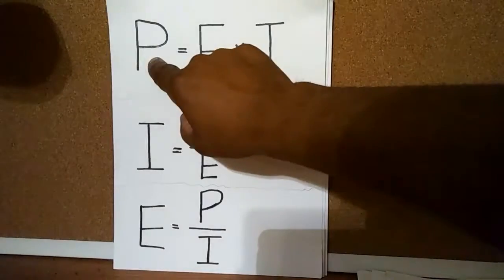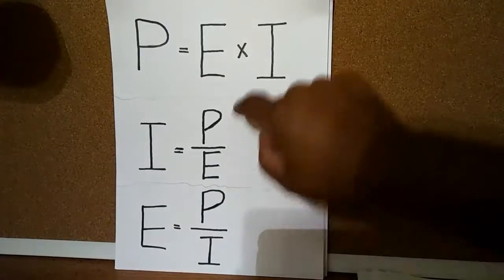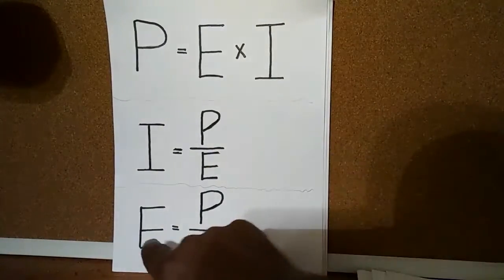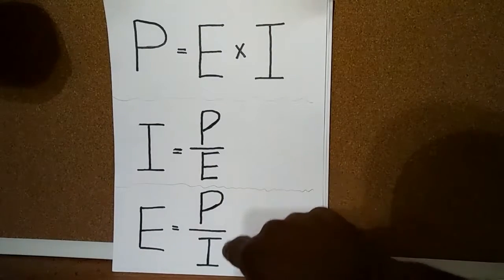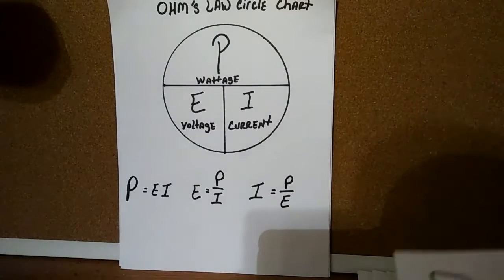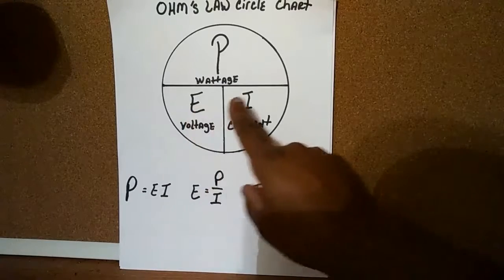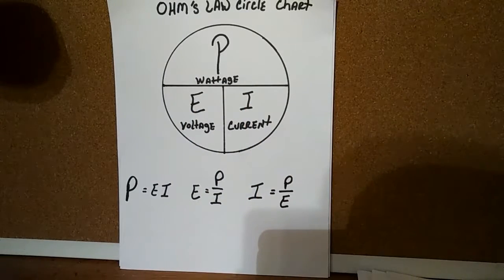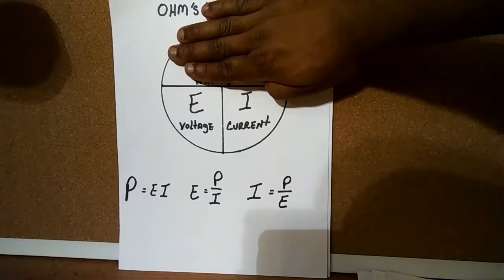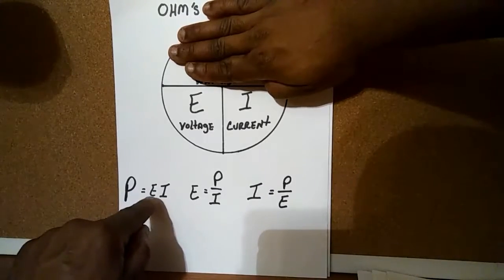Now P equals E times I. The other formulas derived from this top formula are: I equals P over E, and E equals P over I. So let's take a look at that actual circle chart. If you were given a known value of E and a known value of I, and P was your unknown, you would cover the P, which leaves you with E next to I — or E times I. So P equals E times I.